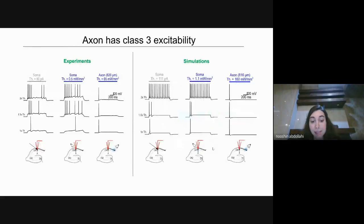And here is the take-home message of our research. You can see that in both experiments and simulations, if we inject current into the soma, or if we photostimulate the soma, we get a repetitive spiking as we increase the stimulus intensity. But if we photostimulate the axon, we get only one single spike regardless of the stimulus intensity, meaning that axon has class 3 excitability.